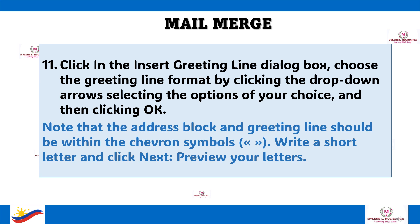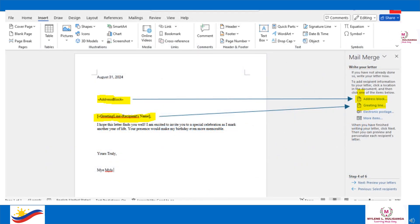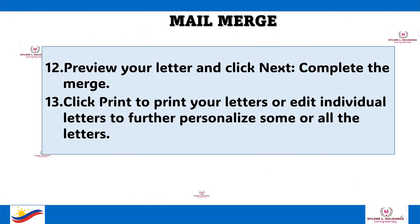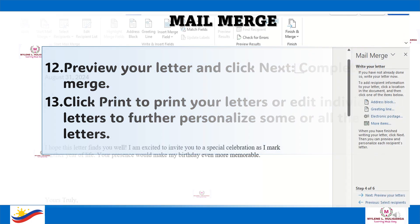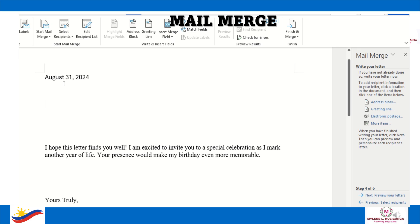Note that the address block and greeting line should be within the chevron symbols. Then write a short letter and click Next, preview your letters. Preview your letter and click Next, complete the merge. Click Print to print your letters, or edit individual letters to further personalize some or all the letters. This is how to insert the address block and greeting lines.